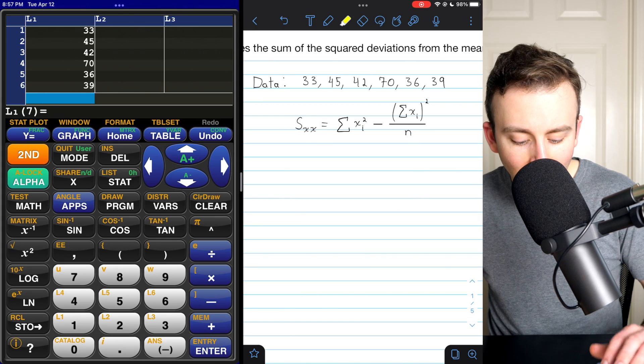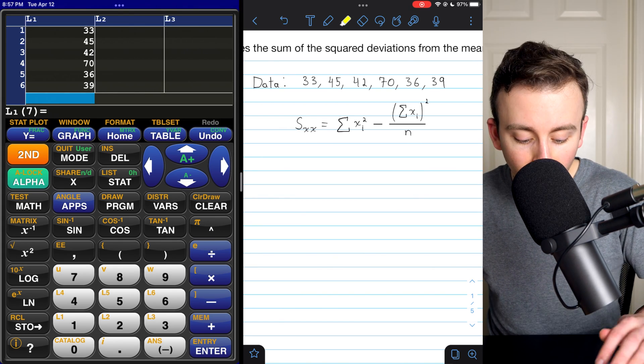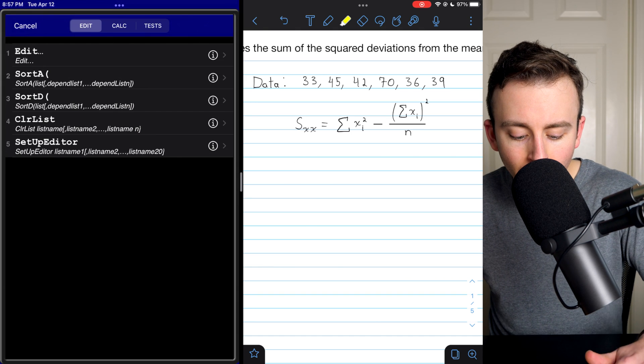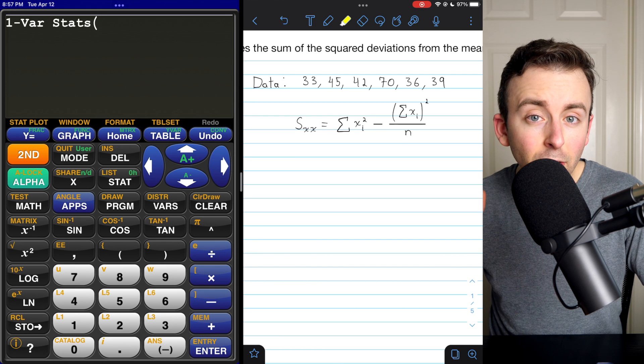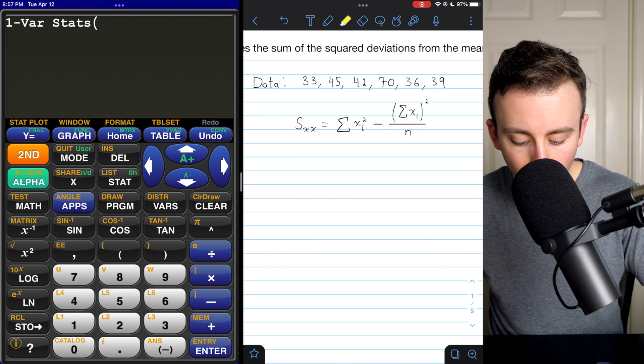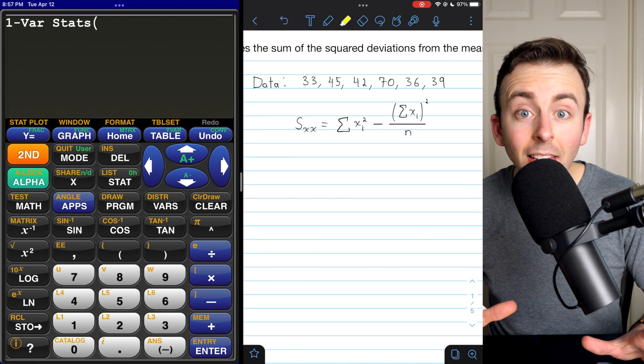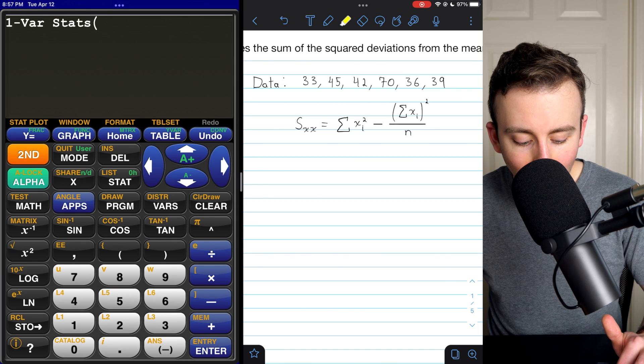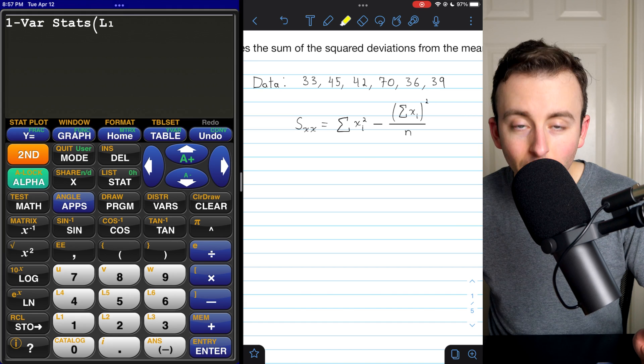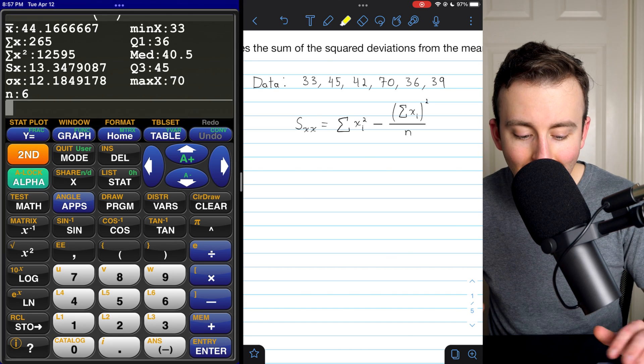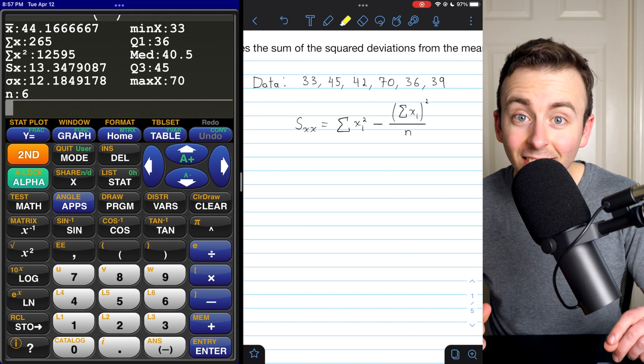Now that I've got the list of data, I can do math with it. So again, I'll press the stat button, and then go to calc, and then press one var stats, which is going to give me the statistics for a single list of numbers. Then I'll put in the list that I want, which is the one we just entered. So I'll press second, list, and then list one. That's where we put our data. Now I've got all the statistics I need.